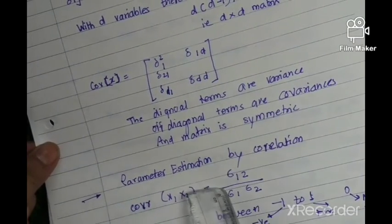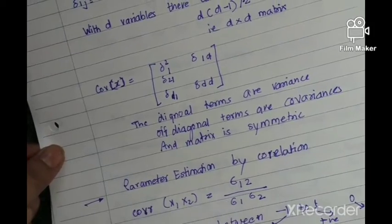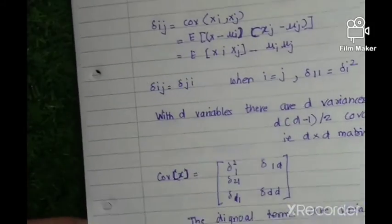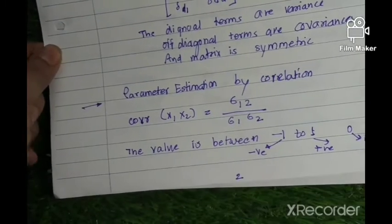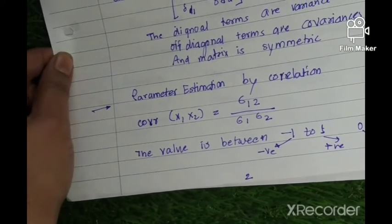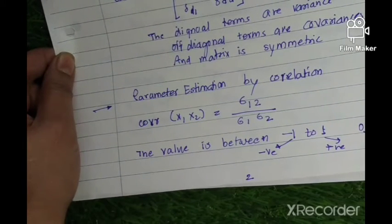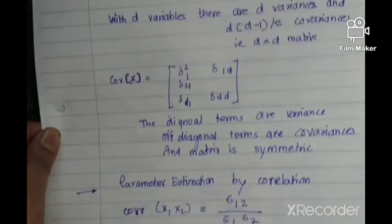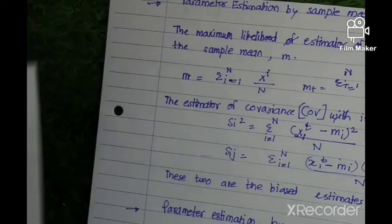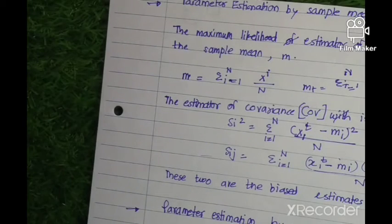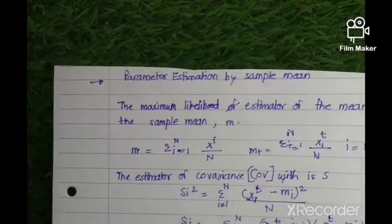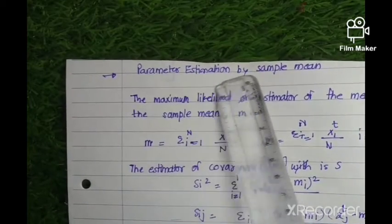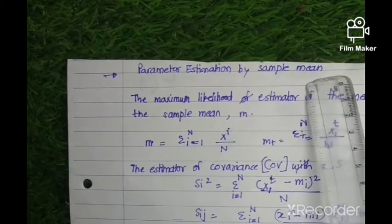We can calculate correlation using this formula. These types of estimations assume that the samples obey the rules of a particular distribution. We have seen parameter distribution for correlation and coherence. Now let us take parameter distribution by sample mean.